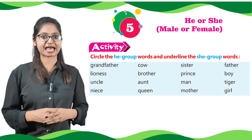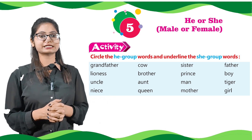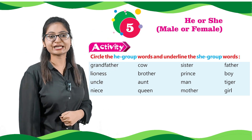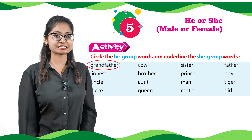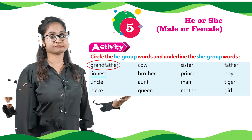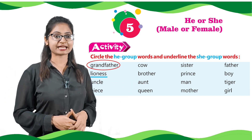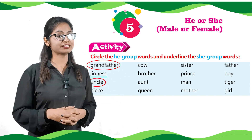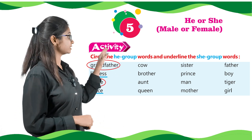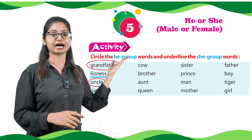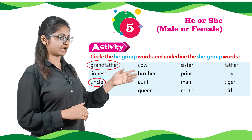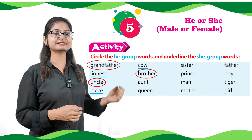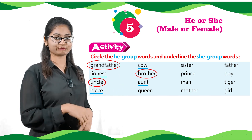Circle the he group words and underline the she group words. In the first series we have grandfather — it comes to the he group, so we will circle it. Next, lioness — we will underline it because it belongs to the she group. Uncle comes to the he group, so we will circle it. Next, niece — we will underline it. In the next series: cow — underline, brother — circle, aunt — underline, and queen — underline.